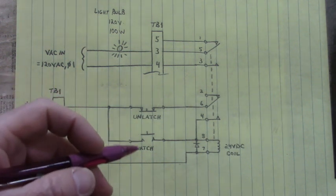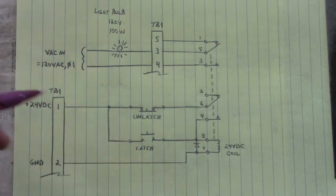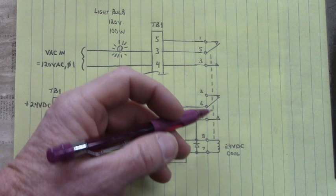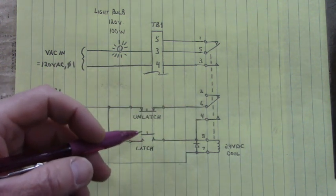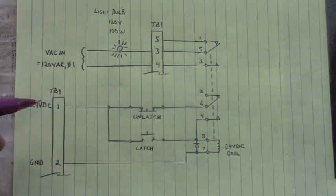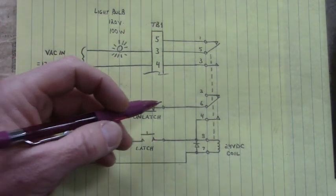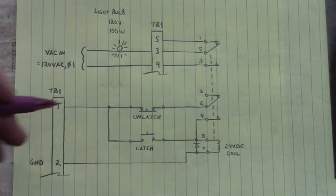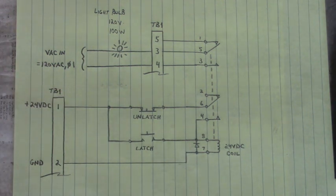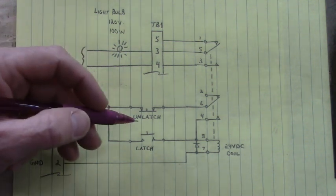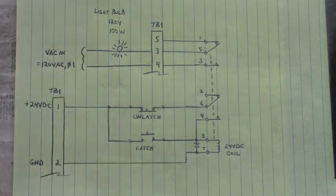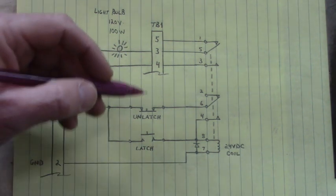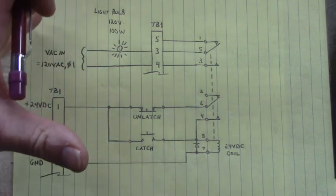And I can release this button because this contact has taken the place of the latch button. So now that relay stays energized. When I want to de-energize, I push the unlatch or the stop button, and that breaks the circuit.